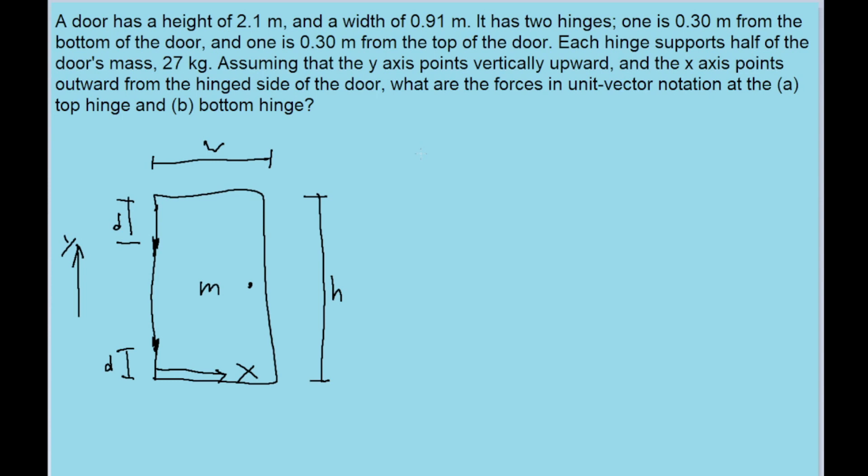The problem asks us to find, in unit vector notation, the formulas for the force that both hinges, the top hinge and the bottom hinge, exert on the door to keep it in place. So because they want it in unit vector notation, we'll want to find the forces from each hinge in the x-direction, which we'll represent with the unit vector i, and the y-direction, which we'll represent with the unit vector j.